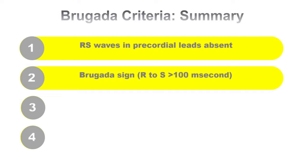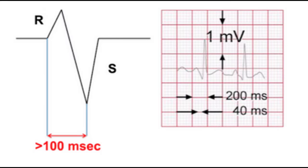The next stage is: is the R-to-S interval more than 100 milliseconds in any of the precordial leads, that is from V1 to V6? It means from the beginning of the R wave to the nadir of the S wave — if it is more than 100 milliseconds, or more than 2.5 small squares, then that is VT according to Brugada criteria.